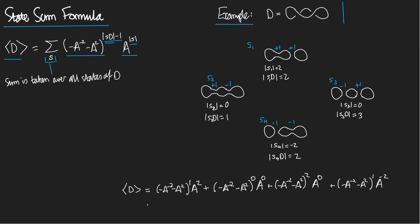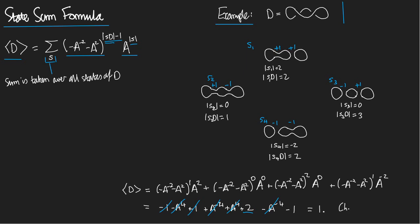Let's work this out. I get minus A^4 plus one, plus one, plus A^{-4}, plus A^4 plus two plus A^{-4}, then minus A^{-4} minus A^0. Combining: minus A^4 plus A^4 cancels, minus A^{-4} plus A^{-4} cancels, and plus one plus one minus one gives one. So the Kauffman bracket equals one — which checks out by the Reidemeister move rules for the unknot.